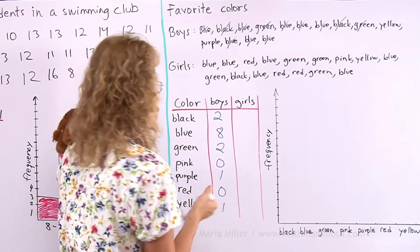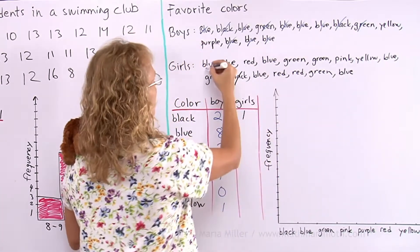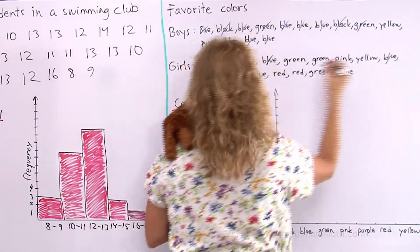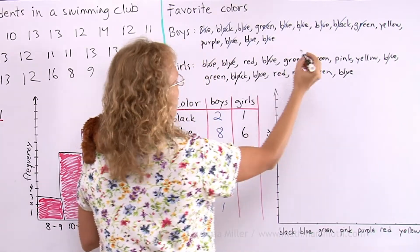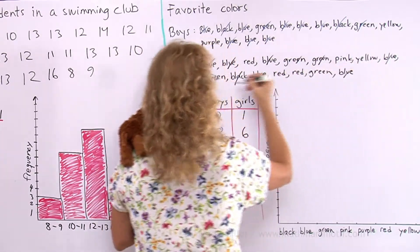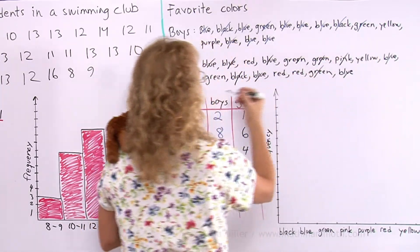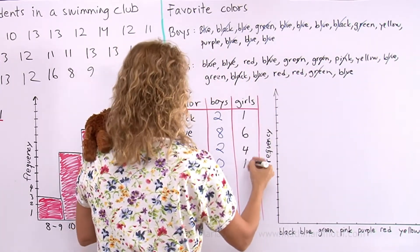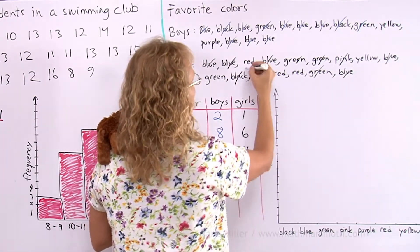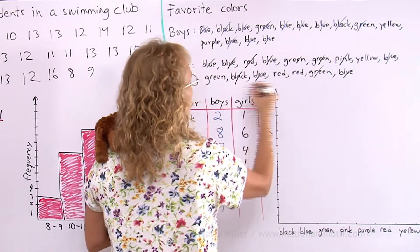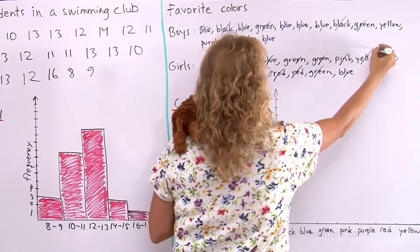And for girls, black, one, blue, three, four, five, six. Green, one, two, three, four, pink, one, purple, nine, red, three, and yellow, one.